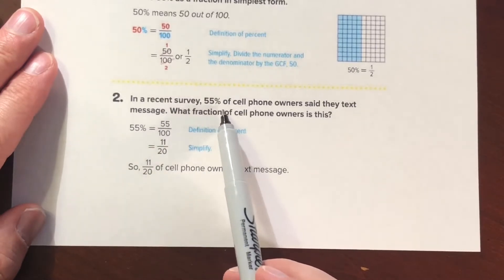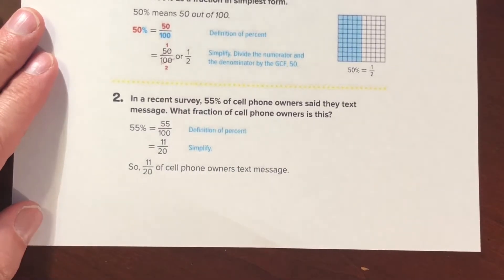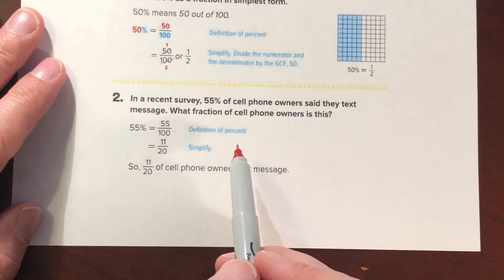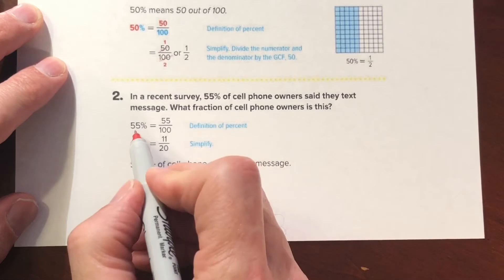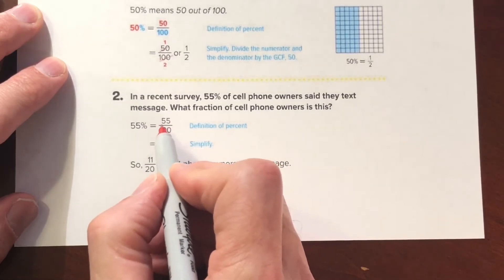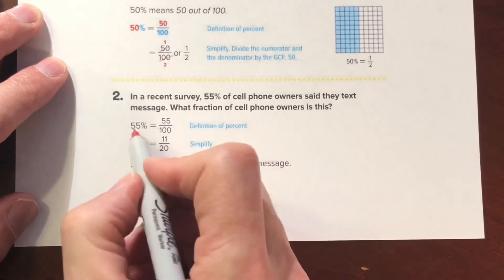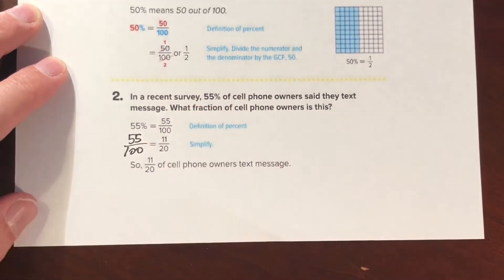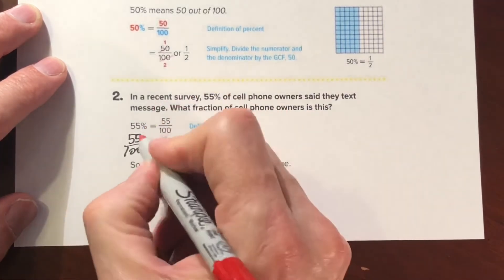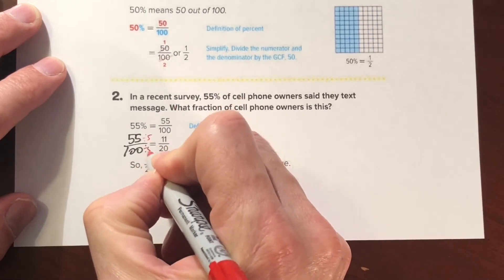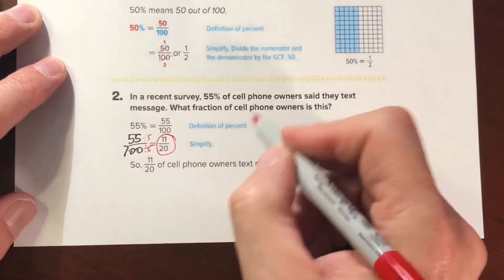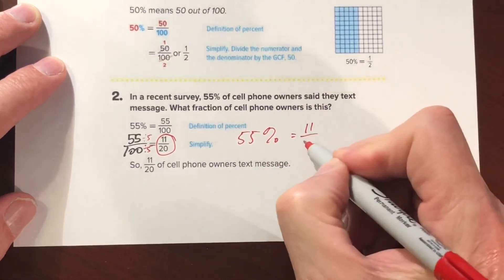In a recent survey, 55 percent of cell phone users said they text message. What fraction of cell phone owners is this? We take 55 percent and write it as 55 over 100. To simplify, we divide each side by 5: 55 divided by 5 is 11, and 100 divided by 5 is 20. So 55 percent equals 11/20.